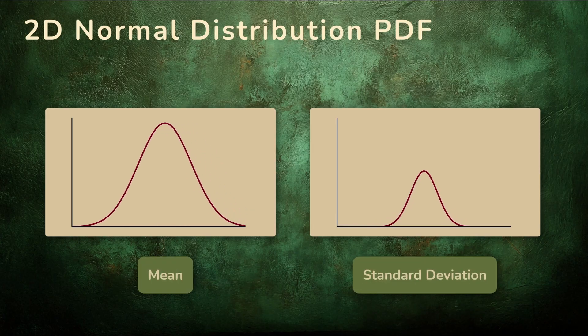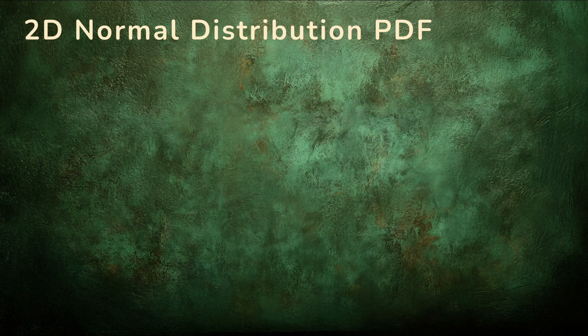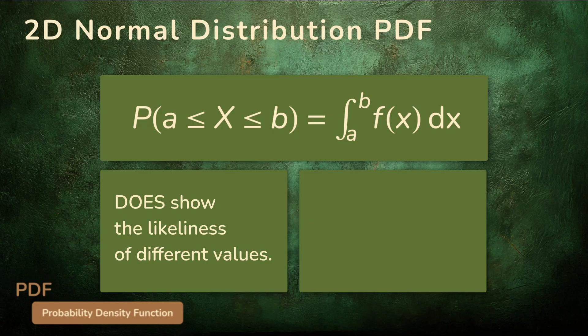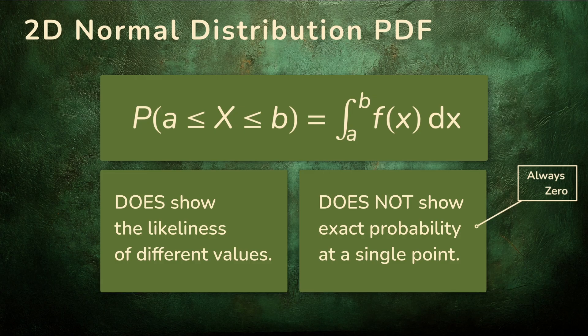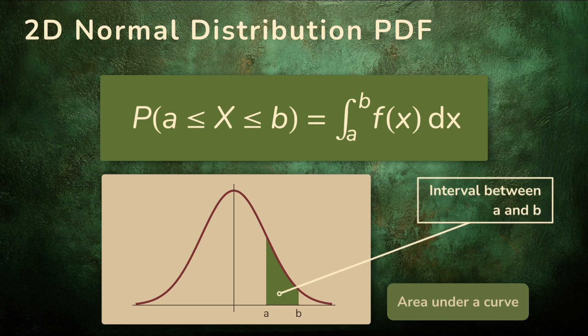It only took two numbers to define the shape of a normal curve, its mean and standard deviation. Now, to graduate from simply describing the curve to understanding what this shape actually represents, a probability density function, or PDF. The PDF tells us how likely different values are, not the exact probability at a single point, that is always zero, but the density of probability in a region around that point. In one dimension, the probability of landing in some interval was the area under the curve across that interval.